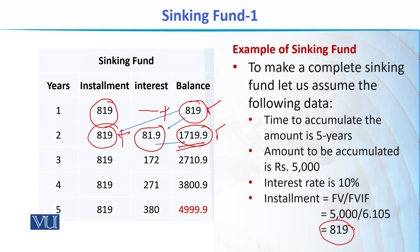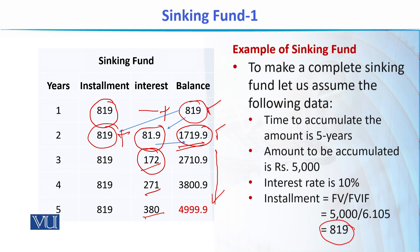Comparing this with the amortization schedule discussion, here the interest amount increases every year. In the second year we earned 81.9, in the third year 172, then 271, and then 380. The reason for this increase is that the balance grows each year — it was at its minimum in the first year, but more installments and more interest are added each period, so the balance and interest keep increasing.